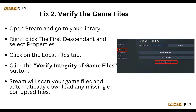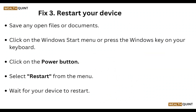Next, verify the game files. Open Steam and go to your library, right-click on The First Descendant and select Properties, then click on the Local Files tab. Click on the Verify Integrity of Game Files button and Steam will scan your game files and automatically download any missing or corrupted files.